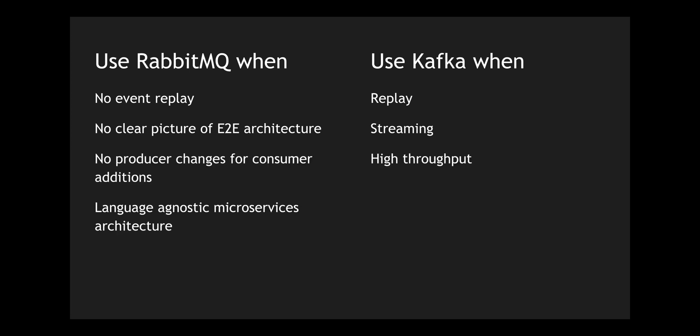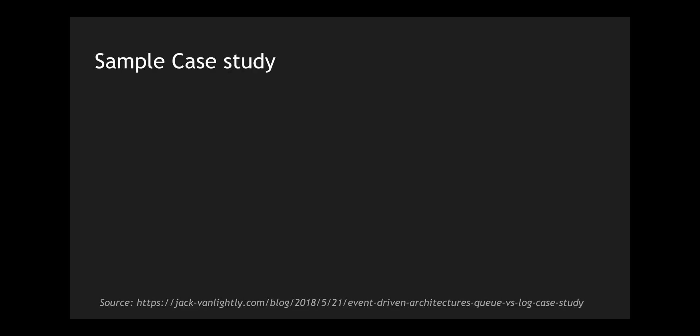If you want to leverage streaming data and process data in the form of streams, use Kafka. When you don't want to change anything on your producer side for any consumer addition, leverage RabbitMQ. If you want high throughput and the ability to scale quickly within your microservices architecture for processing a huge number of messages, definitely leverage Kafka. One advantage of RabbitMQ over Kafka is that it is language agnostic — you can create multiple microservices communicating with different languages. RabbitMQ provides more integrations than Kafka.